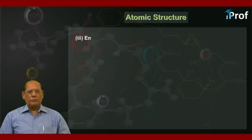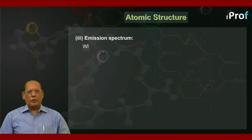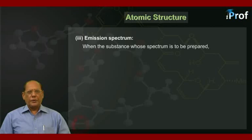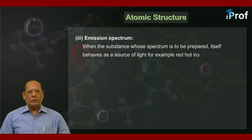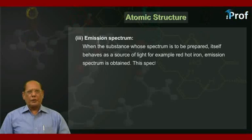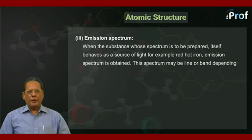Third, emission spectrum. When the substance whose spectrum is to be prepared itself behaves as a source of light, for example red-hot iron, then emission spectrum is obtained. This spectrum may be line or band, depending on the molecular nature of the substance.